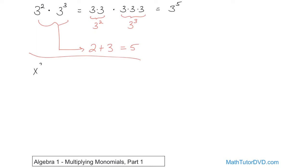For instance, if you have x cubed and you're multiplying it times x to the 4th, what would that be? All you do, first of all, is say: I have the same base, which is x, and the exponents are just going to be added together. So you can write this down as x to the power of 7 without even thinking about it.